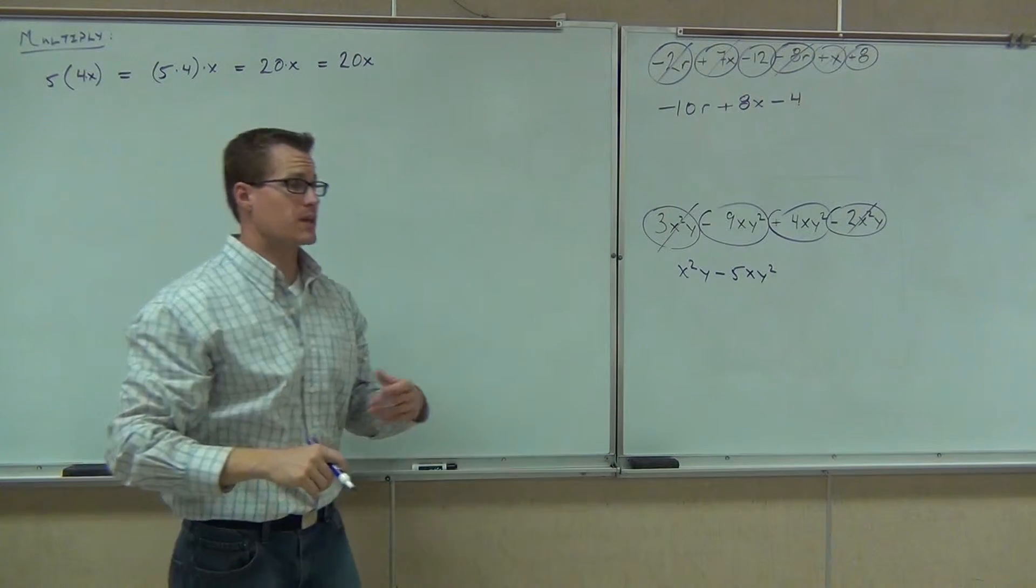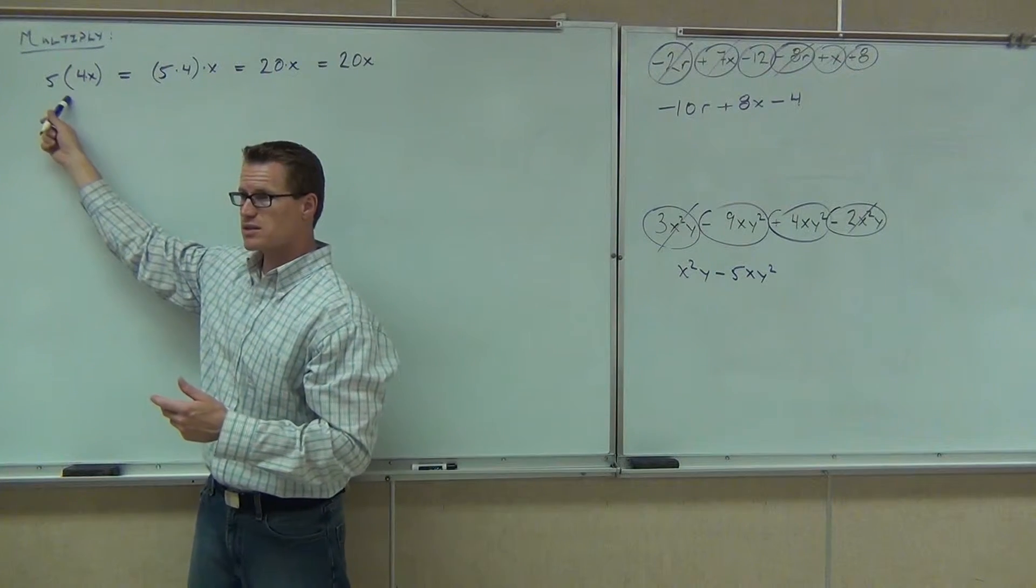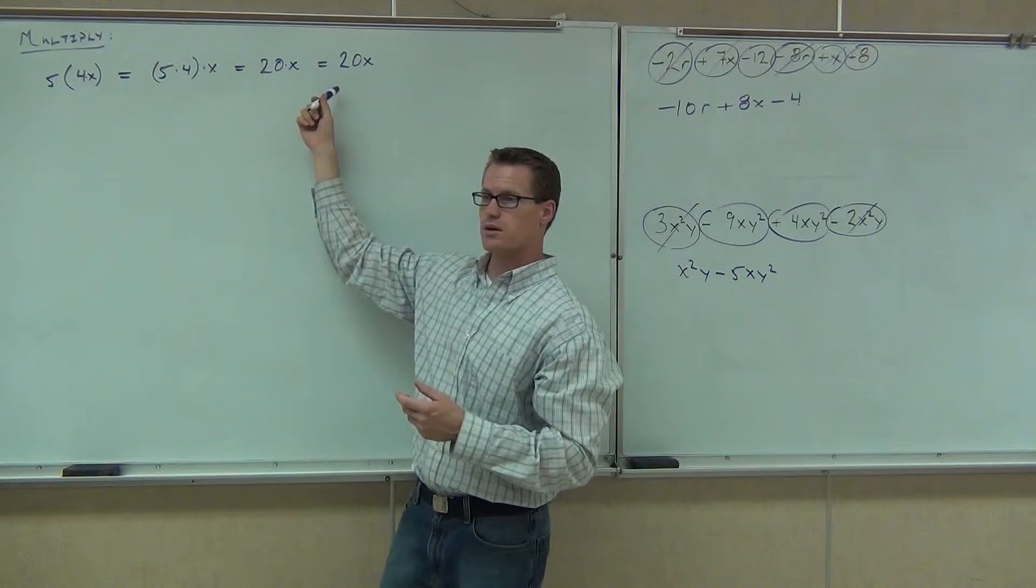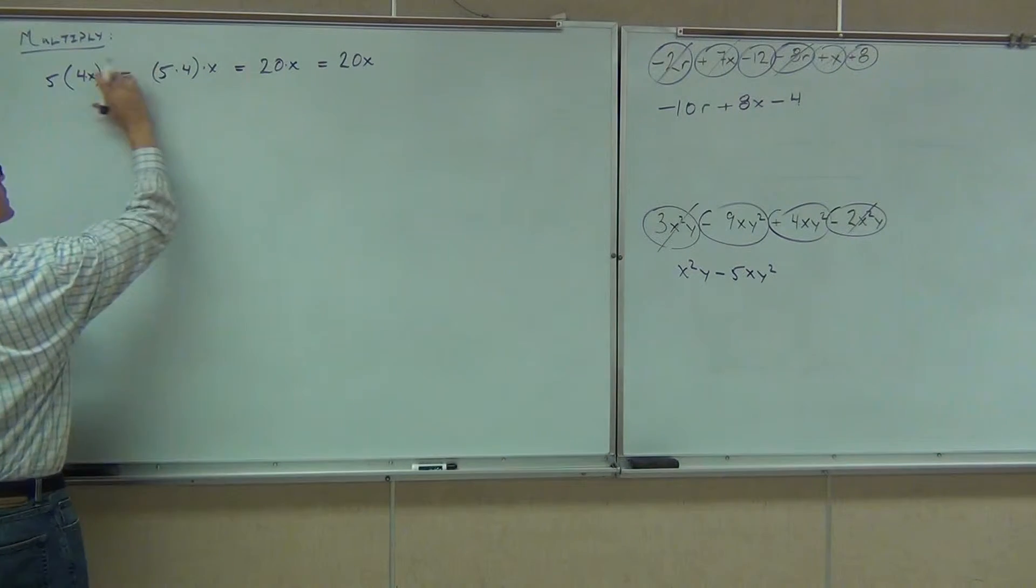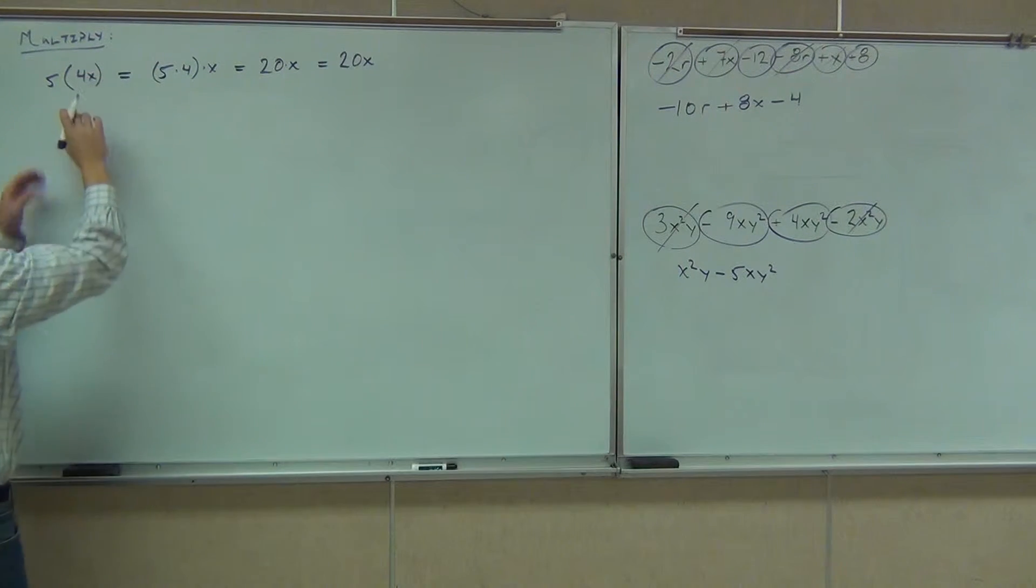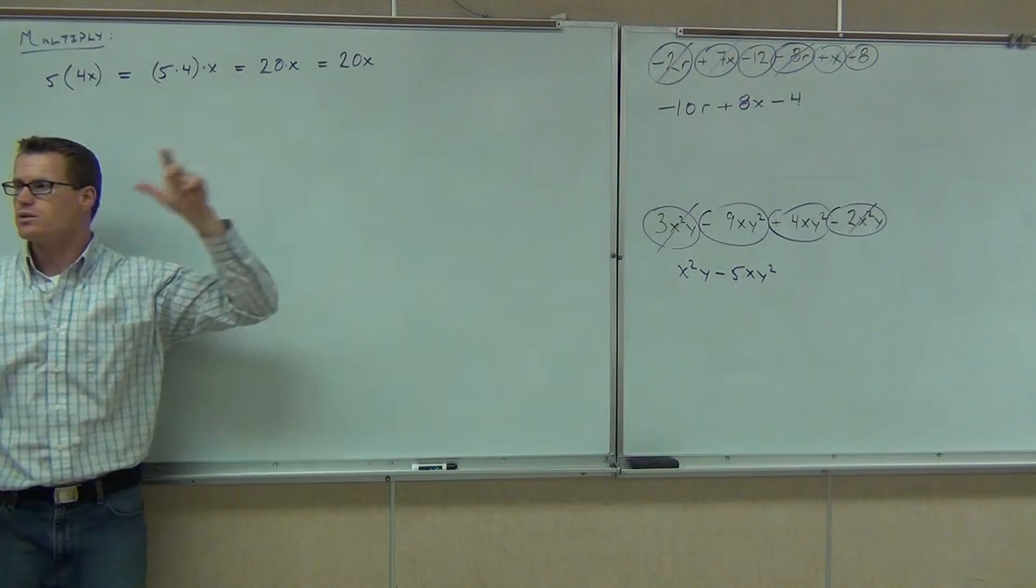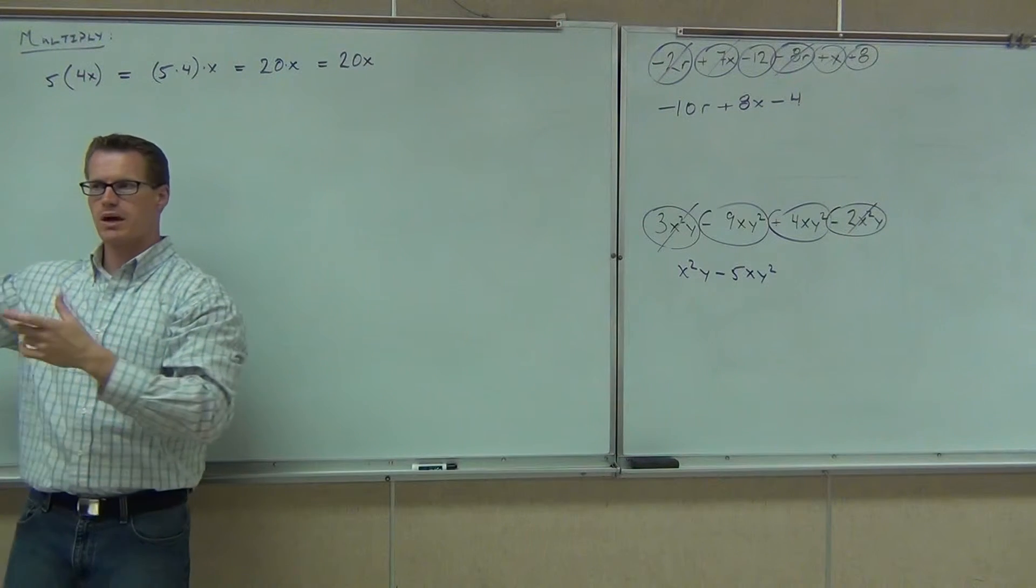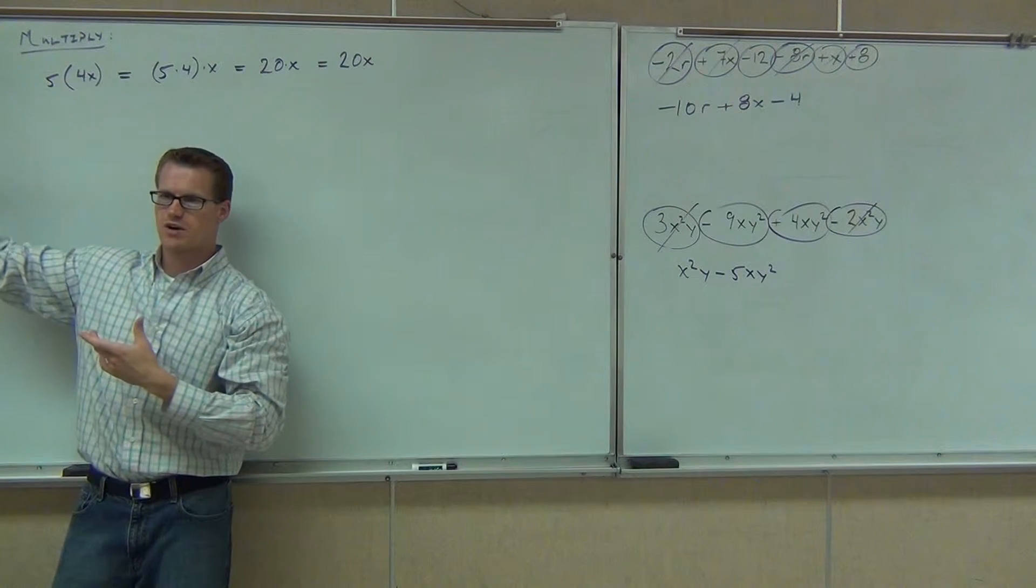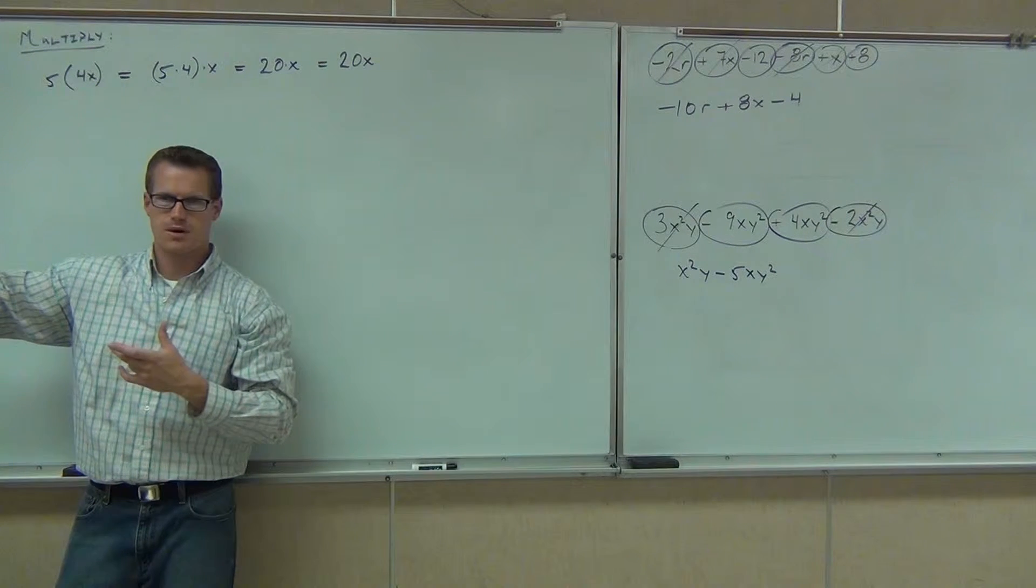So instead of having 5 times 4x, which really means 4 times x, I really could group the 5 and 4. So here I could do, instead of 5 times 4 times x, I can do 5 times 4 times x. That's legal to do. That's the associative property. Then it would just be 20x. Because the x is on the outside. So this would be the same thing as 20 times x, which is 20x. Of course, I showed this to you to prove that it's right, but do you have to do this every time or can you just get straight to the answer?